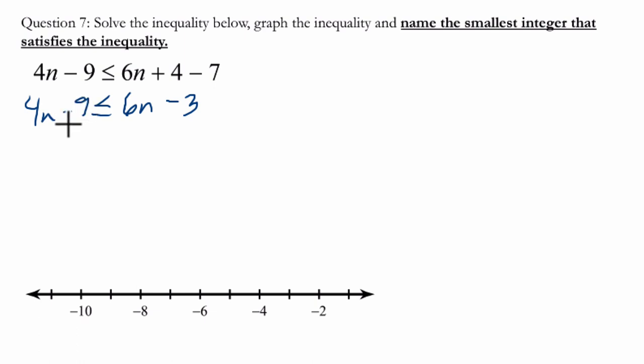I notice I've got a 4n on the left and a 6n on the right, so if I subtract 4n from both sides and simultaneously add 3, that'll give me negative 6 less than or equal to 2n, so my variable is almost completely isolated.